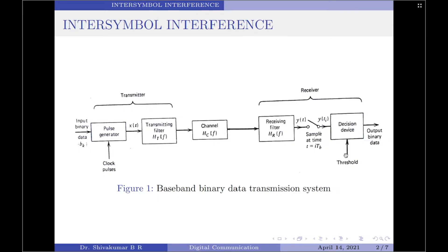Finally, the sequence of samples y(ti) are used to reconstruct the original data sequence by using a decision device that compares the sample amplitude with a predetermined threshold. Let us assume that symbols 1 and 0 are equally likely. Therefore, the optimal threshold is halfway between the two representation levels. If the sample amplitude exceeds the threshold, a decision is made in favor of symbol 1; if it is less, a decision is made in favor of symbol 0; and if it equals the threshold exactly, a decision is made by flipping a fair coin.